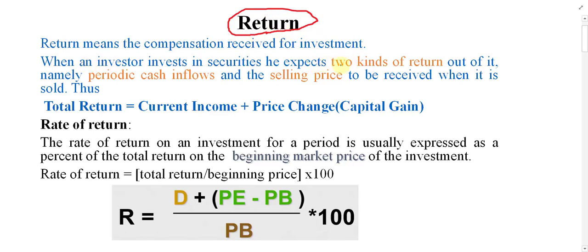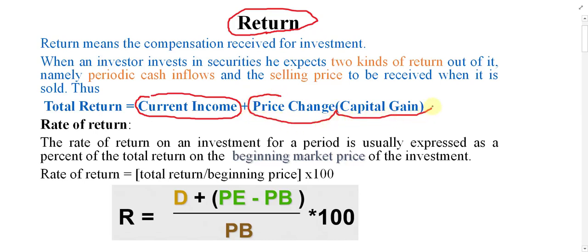When investors invest in the business, they expect two types of income. One type of income is called current income, also called regular income. The other type of income they expect from the business is called price change, also called capital gain.